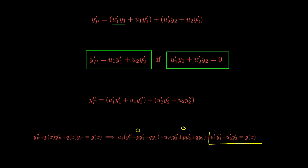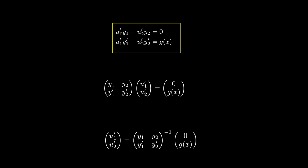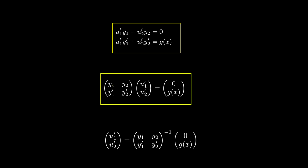Combining this equation with the assumption from earlier gives us a linear system, which is just this one here. Given a linear system, the straightforward thing to do is convert it into a matrix equation. You can verify that multiplying y1 by u1 prime gives this term, and y2 by u2 prime gives this one.